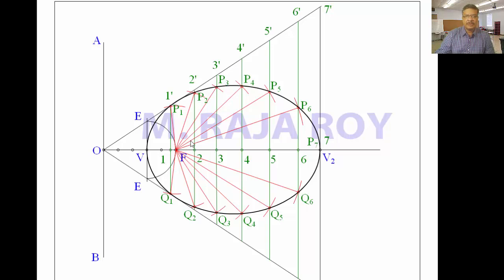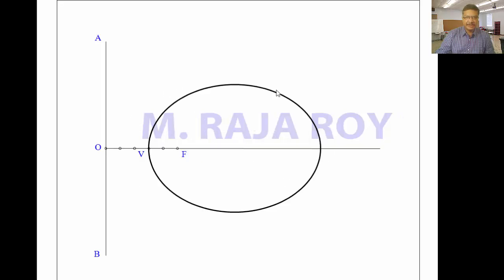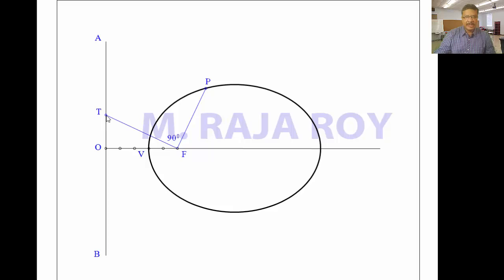Next, how to draw the tangent and normal to the ellipse. Take one point P on the ellipse. Draw a line joining P to the focus F. Then draw a perpendicular to PF until it intersects the directrix — call this point T. The line joining T and P is the tangent. The line perpendicular to this tangent at P is the normal.